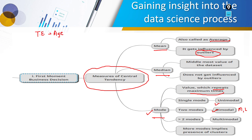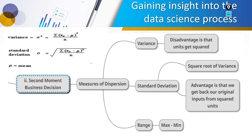Outliers are data points very far from the rest. Mean is affected by outliers, but median is not — because in median we arrange data in ascending order and select the middle value. So that's the first moment business decision: measure of central tendency with mean, median, and mode.